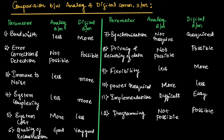The analog system requires more power for transmission of data, while digital systems require less power compared to the analog system. The analog systems are a little bit difficult for implementation, but digital systems are easy to implement.